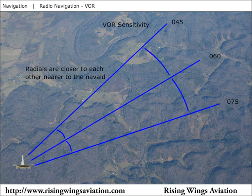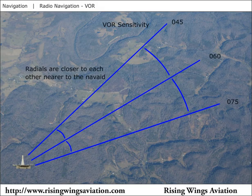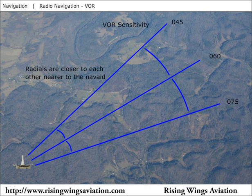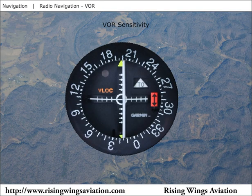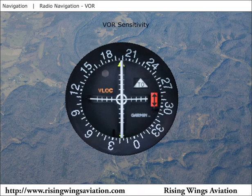Since the radials a VOR transmits all originate at the VOR station itself, the distance between radials increases the further the airplane is from the station. This means that the needle is slower to respond at greater distances from the VOR, since the airplane must move a greater distance to move from one radial to the next. As the airplane gets closer and closer to the station, the needle will become more and more sensitive, making it more and more difficult to keep centered.